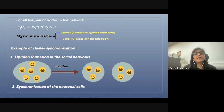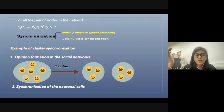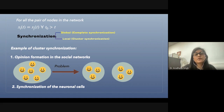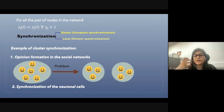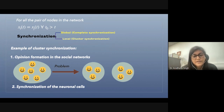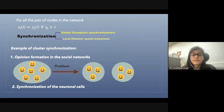Synchronization could be global, where all nodes get synchronized and form one cluster. There is also local synchronization — cluster synchronization — where some nodes get synchronized and form clusters. Examples of cluster synchronization include opinion formation in social networks. In the case of the brain, cluster synchronization is required for proper functioning, while global synchronization is associated with diseases.